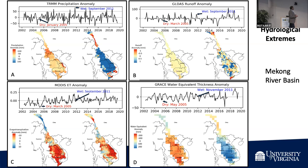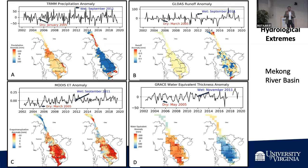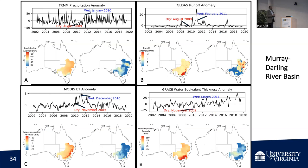You can see the lower Mekong River Basin: September 2011, wet and rained; January 2005, very dry. That's reflected in the MODIS ET anomaly, the GLDAS runoff anomaly, and the GRACE water thickness. All different hydrological variables coming from different sources, but they tell a very consistent story which appeals to understanding the hydrological cycle.